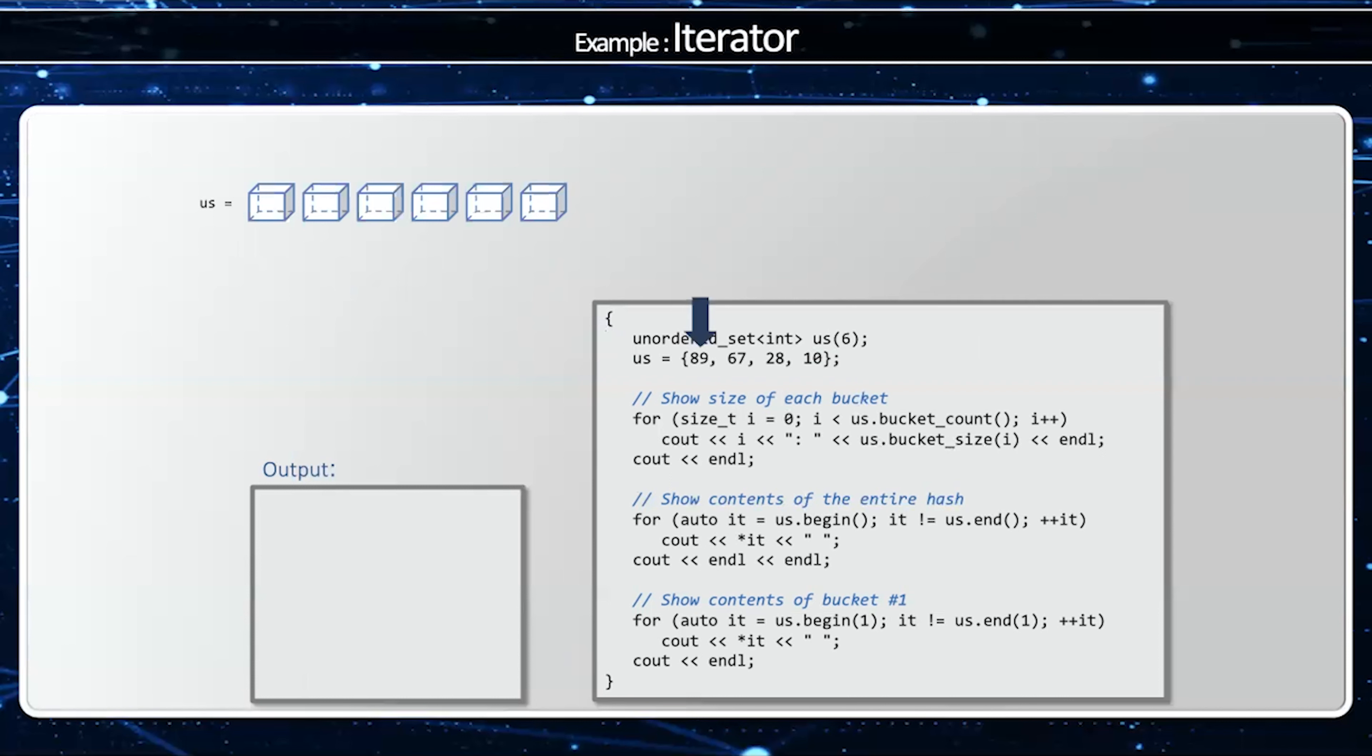So I start with the constructor which is going to have six empty buckets. Then I'm going to say 89. So 89 is the hash value. When I 89 mod 6 I'm going to get 5 and that's where I put the value. 67 mod 6 will give me 1. 28 mod 6 will give me 4.